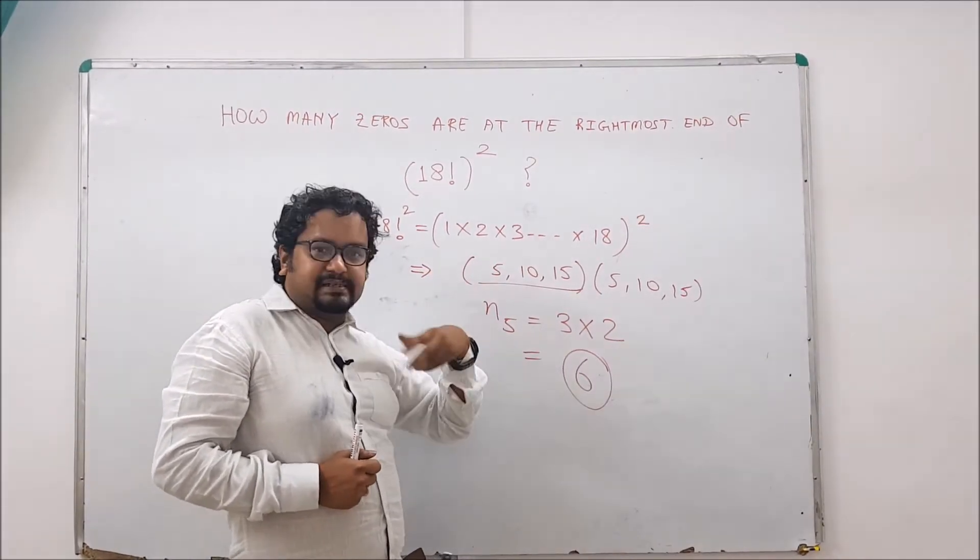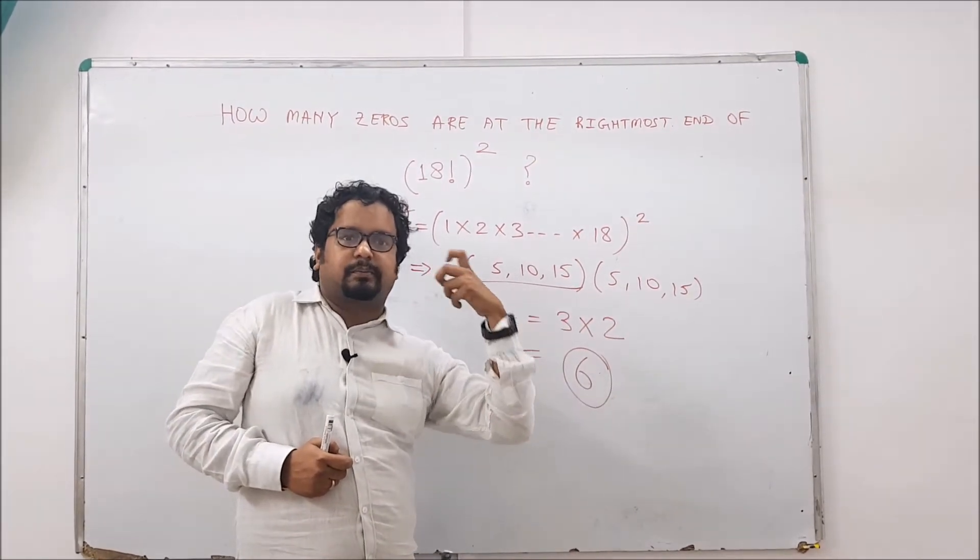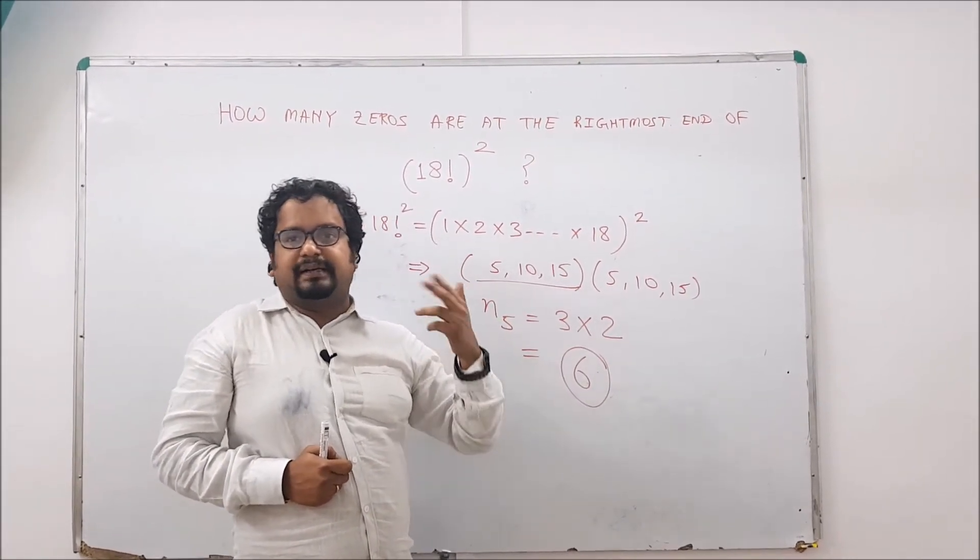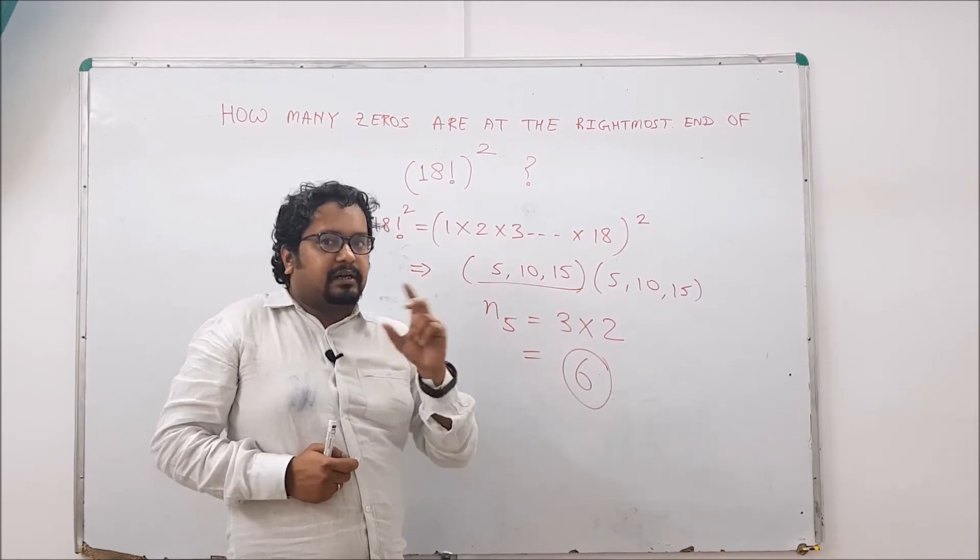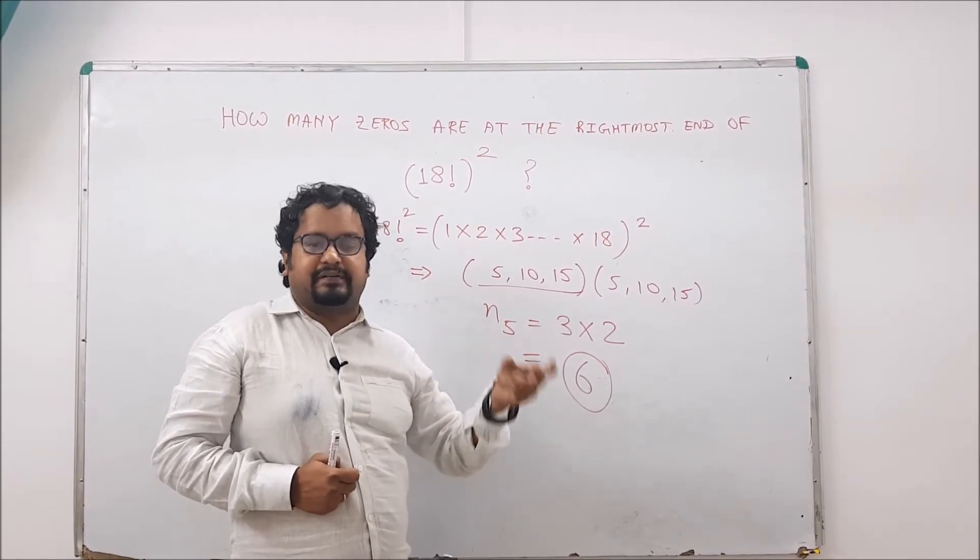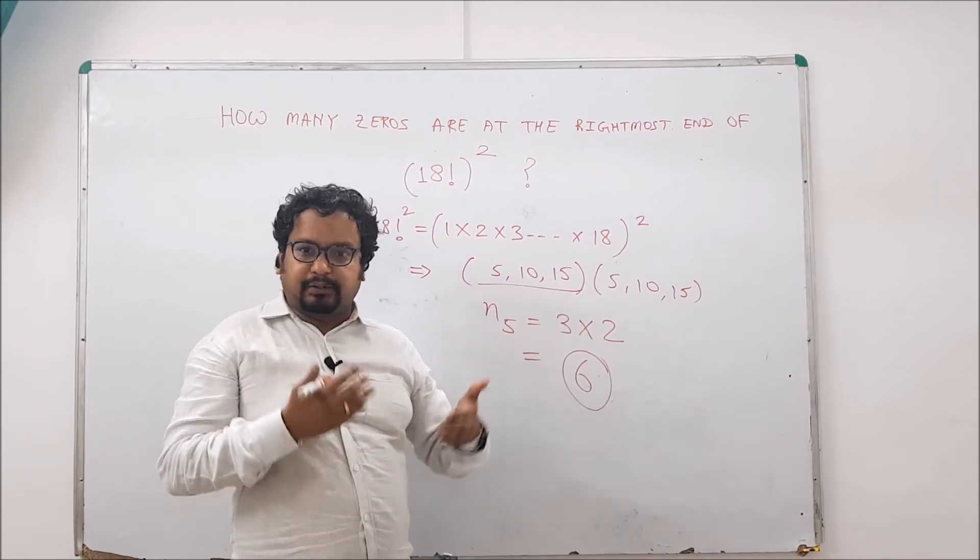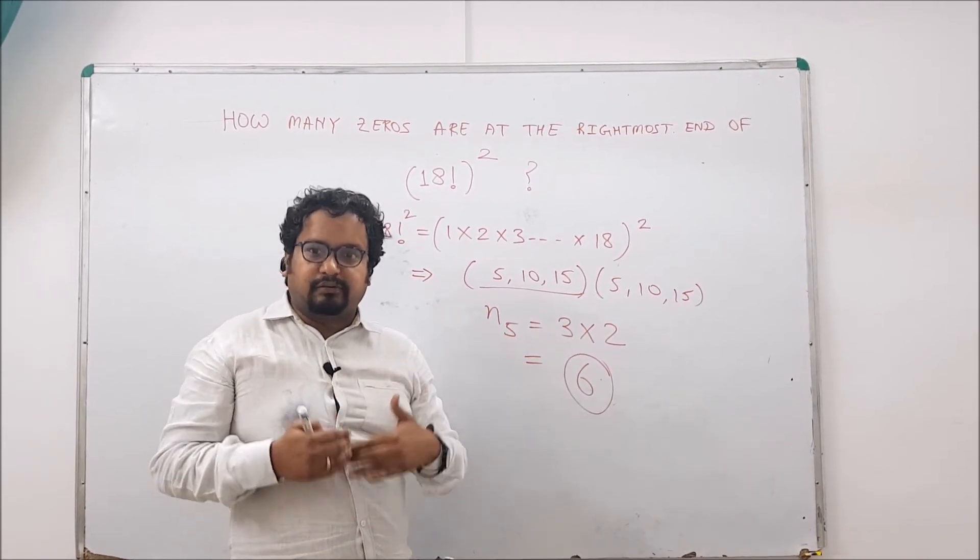Since every second term is divisible by 2 and every fifth term is divisible by 5, the number of 5s will be less than the number of 2s, which means the number of zeros will depend on the number of 5s. I repeat, the number of zeros at the end of a factorial depends on the number of 5s.